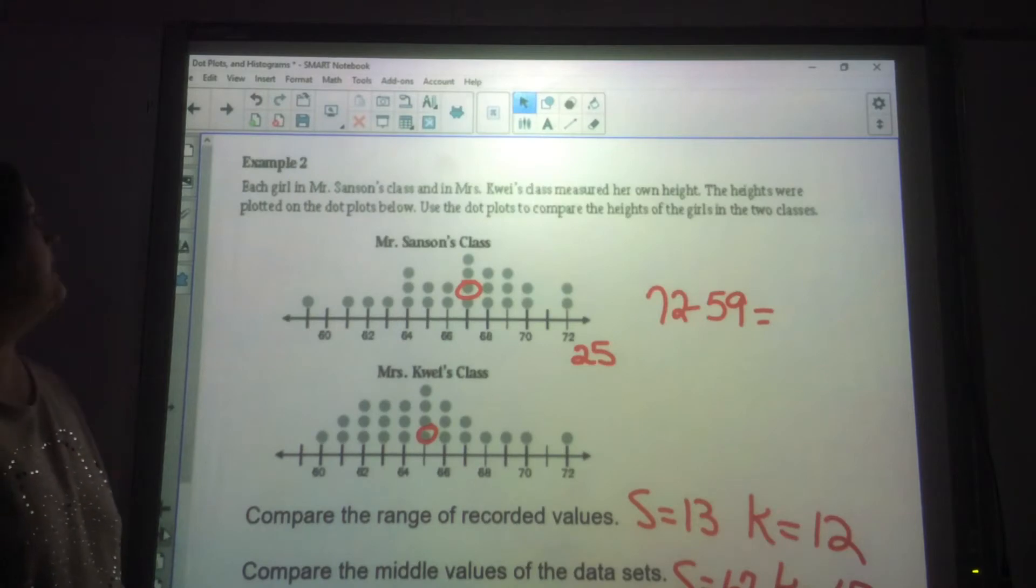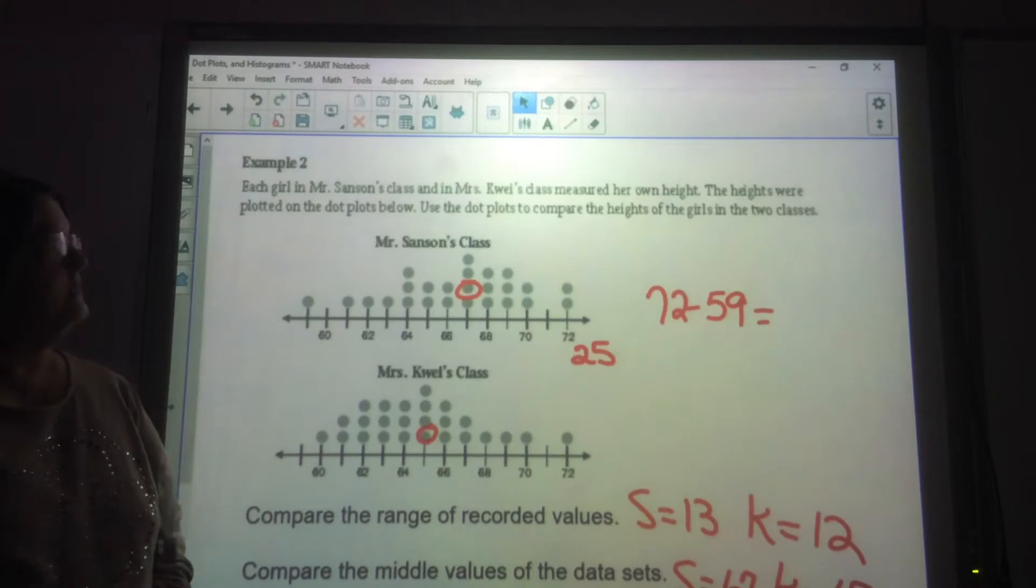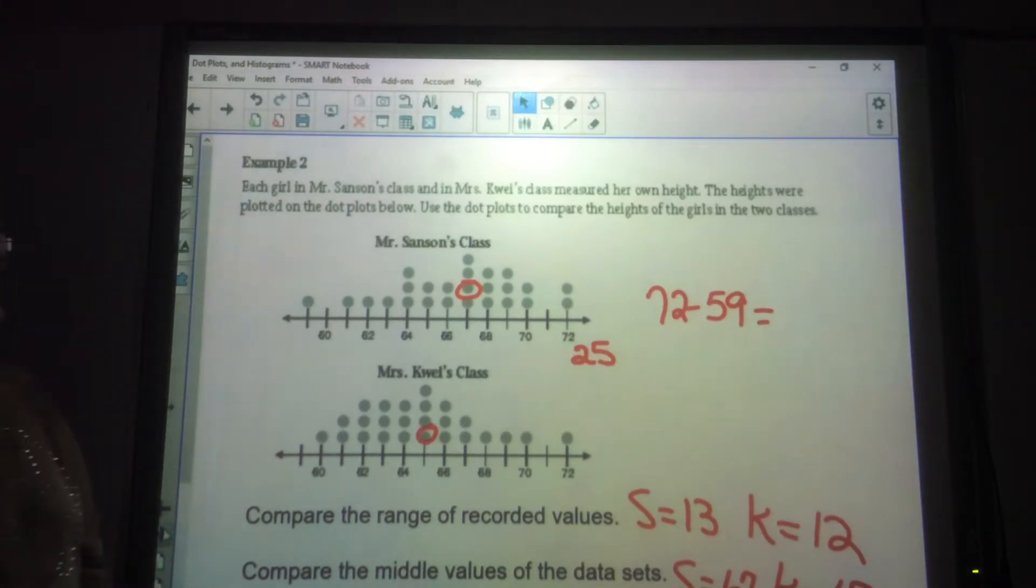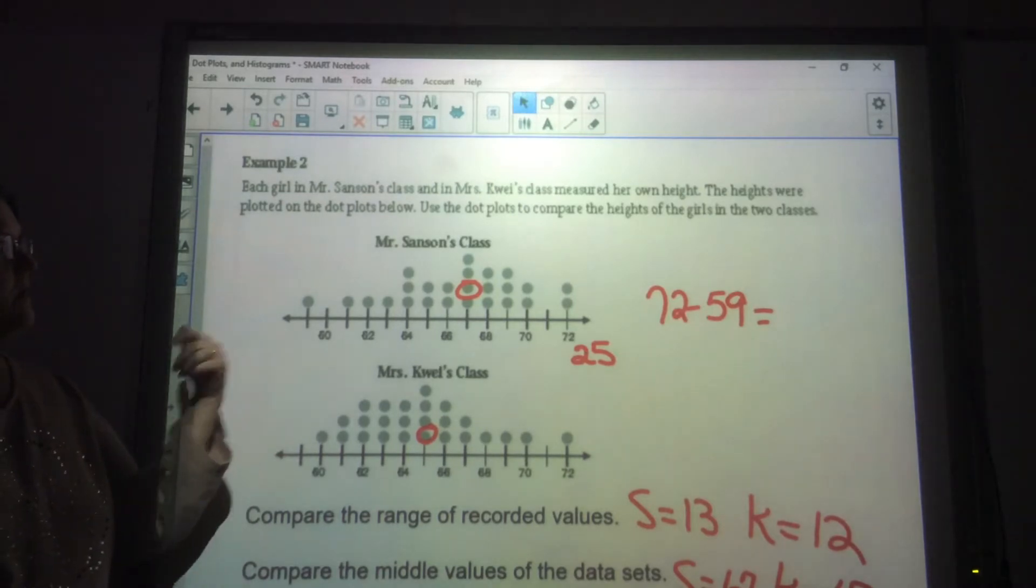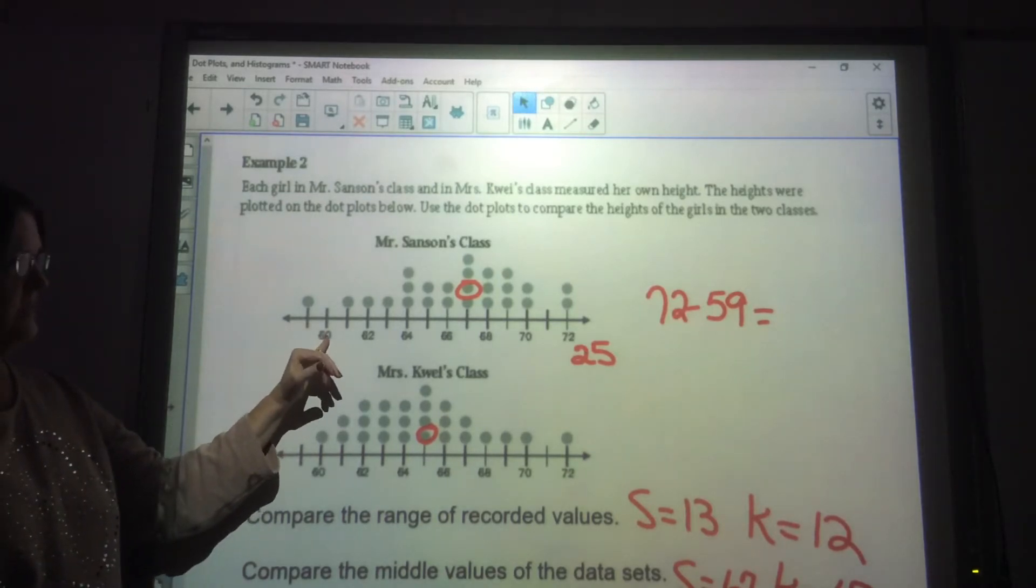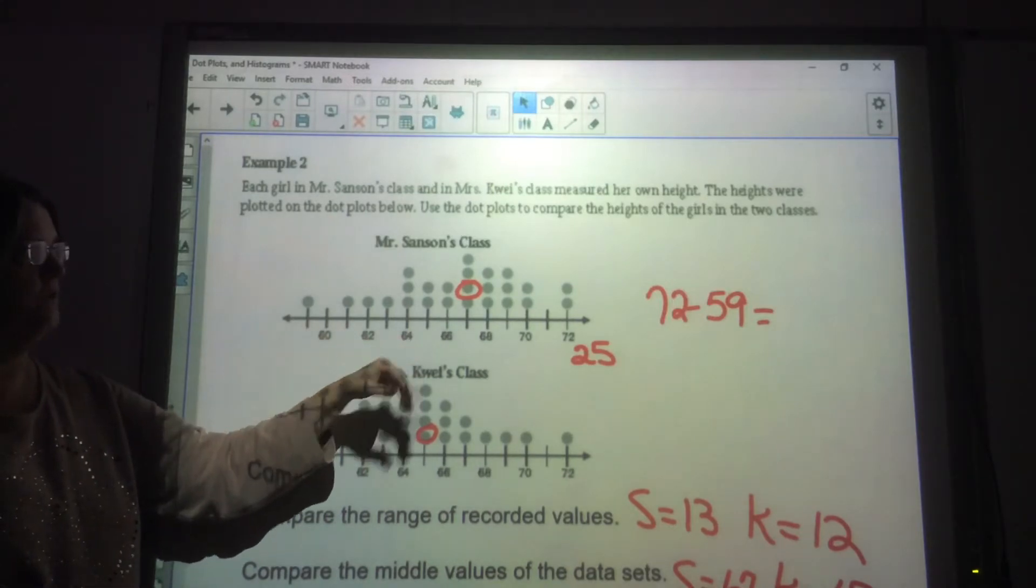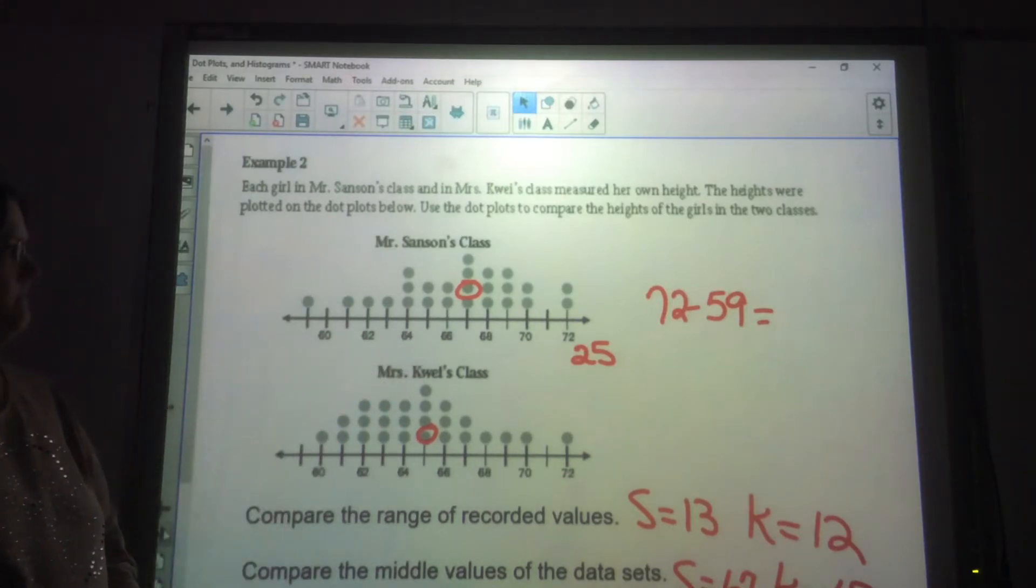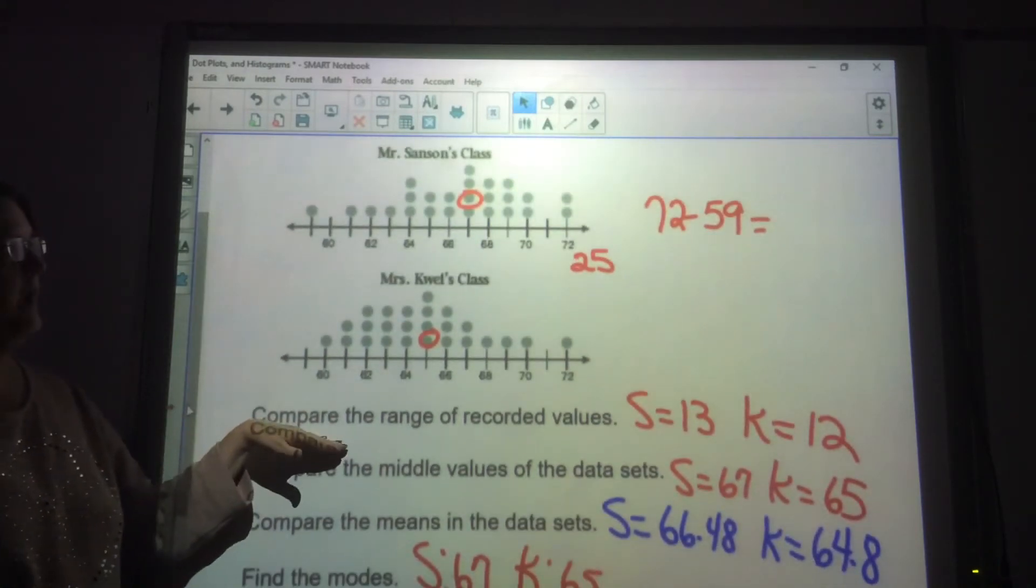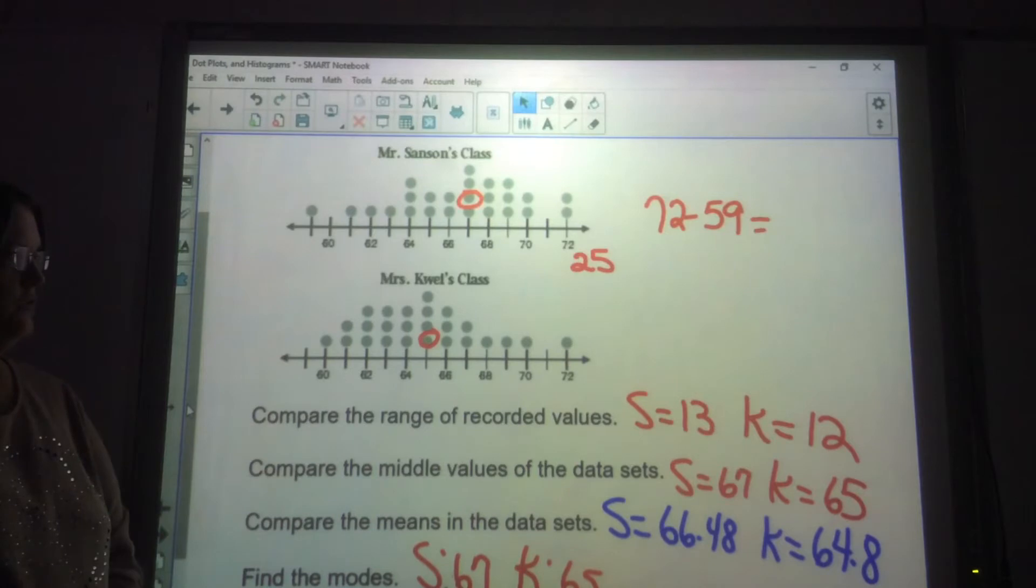Okay, now let's take a look at what we can do with this data. Each girl in Mr. Sanson's class and Mrs. Quay's class measured her own height. The heights were plotted on the dot plots below. Use the dot plots to compare the heights of the girls in the two classes. Now, this is inches. So we've got 60 here. That means this is 59, 62, 64, you get the idea.